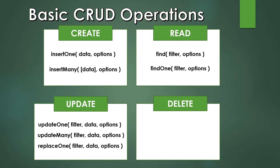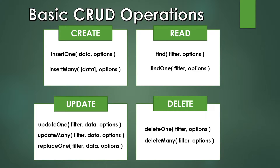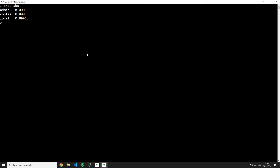For update we have three commands: 'updateOne' takes a filter, the data to update, and options; 'updateMany' also takes a filter, update data, and options; 'replaceOne' completely overrides the document — it doesn't just add fields, it replaces everything. For delete, 'deleteOne' deletes the first match by filter, and 'deleteMany' deletes all matches.